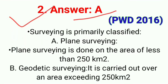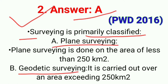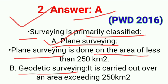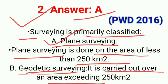Answer is A. Surveying is primarily classified into two types: first, plane surveying, and second, geodetic surveying. Plane surveying is done on an area of less than 250 km². Geodetic surveying is carried out over an area extending more than 250 km².